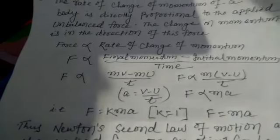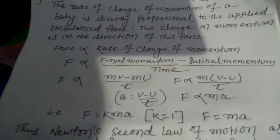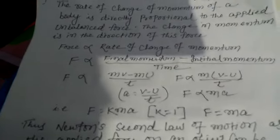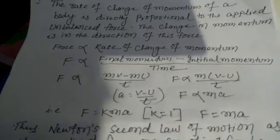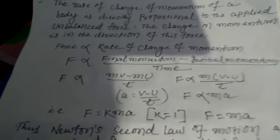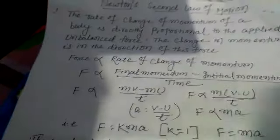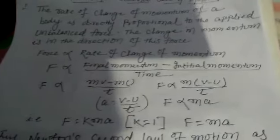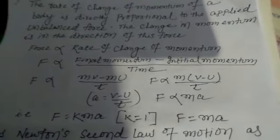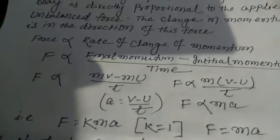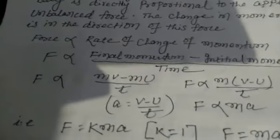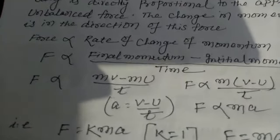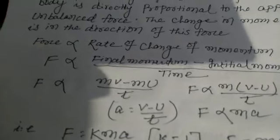There are two types of force: balanced and unbalanced. An unbalanced force acting on a body changes its position. So force is directly proportional to the rate of change of momentum. Force is proportional to final momentum minus initial momentum, that is F is proportional to MV minus MU divided by T.